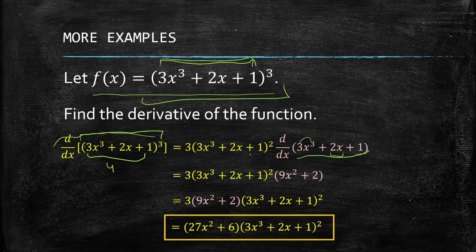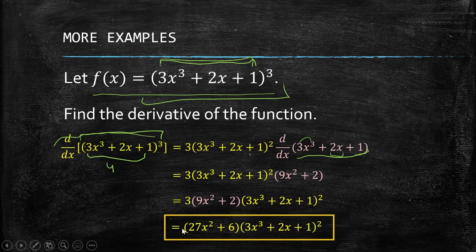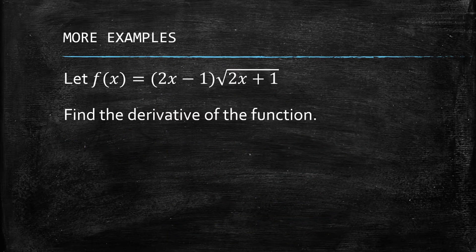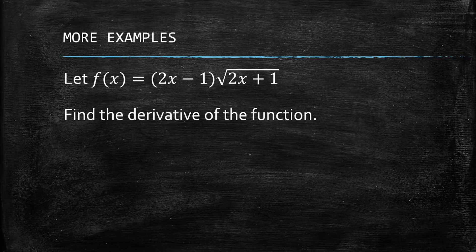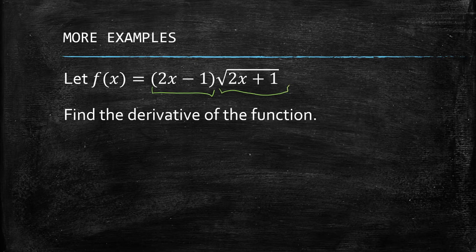This is our final answer. You don't need to expand anymore — simplifying means making the function as compact as possible. Let's have another example: f(x) = (2x - 1) times the square root of (2x + 1). We are asked only to find the derivative. Take note that we have a product here — the factors are (2x - 1) and the square root of (2x + 1).